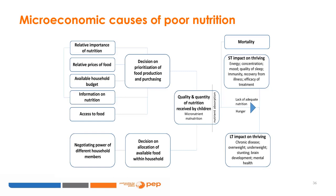A household's food availability will be determined by the relative importance of nutrition in the household and their nutritional knowledge, as well as prices, overall budget, and access to food. Once food has been purchased, the allocation of food within the household will be determined by negotiating power within the household. The flow diagram outlines how food choices affect functioning in the short term and health outcomes over the long term.